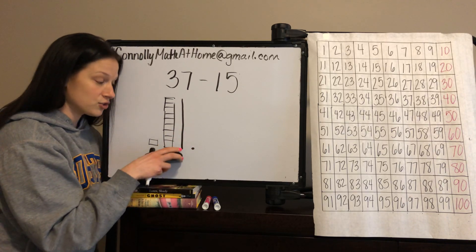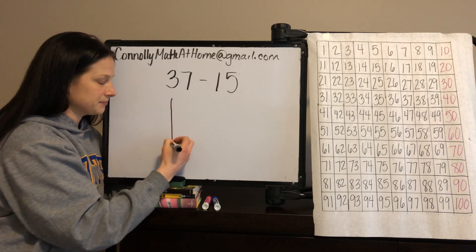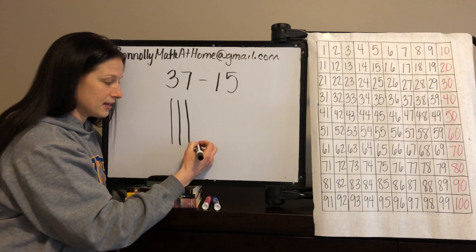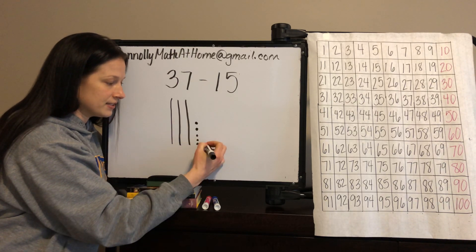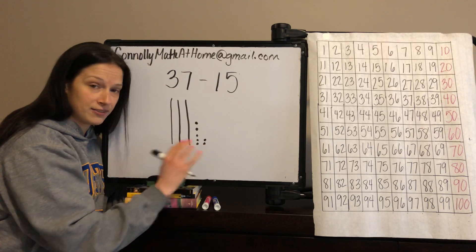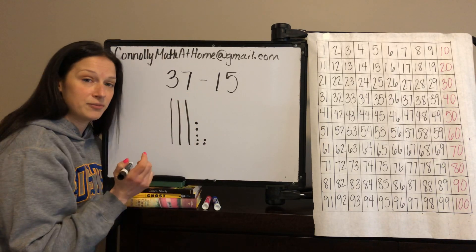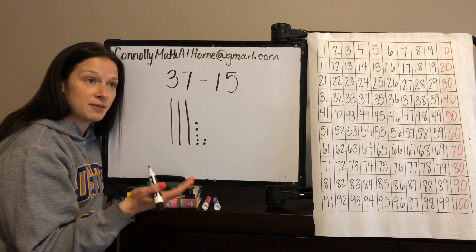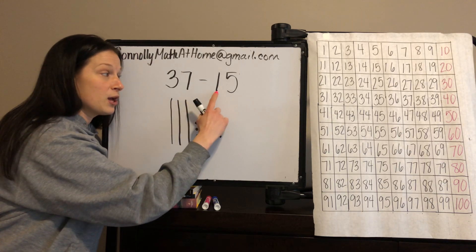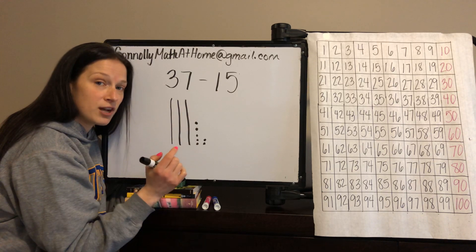Instead of drawing all of this, I'm going to represent 37 with three strips of 10 — that represents 30 cubes: 10, 20, 30 — and then seven singles: 1 through 7. We've shown all 37. Now, looking at how much we have to subtract, I see a 1 as the digit in the tens place, so I know I'm going to cross off one group of 10.